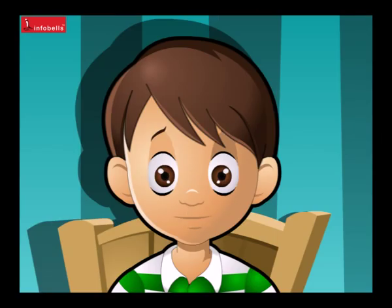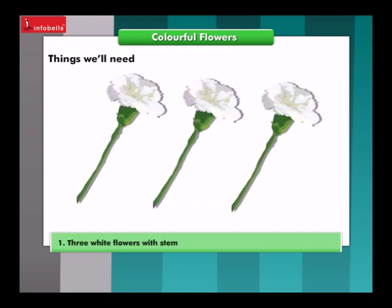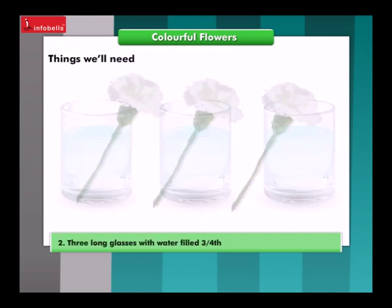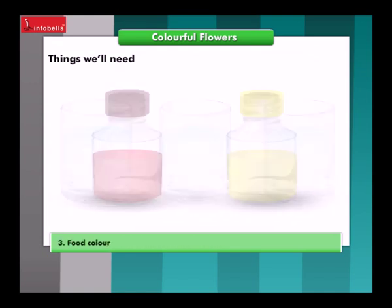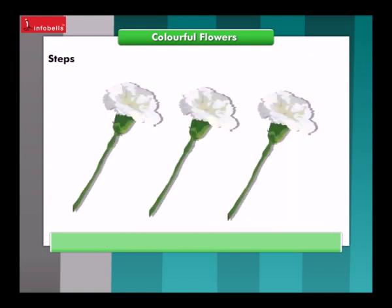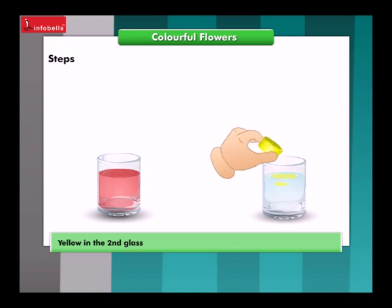But how? We need some material to start. We'll need three white flowers with stem, three long glasses with water filled three-fourths, and food color. Cut the stem at the end of the flower. We will add red color in the first glass, yellow in the second glass.